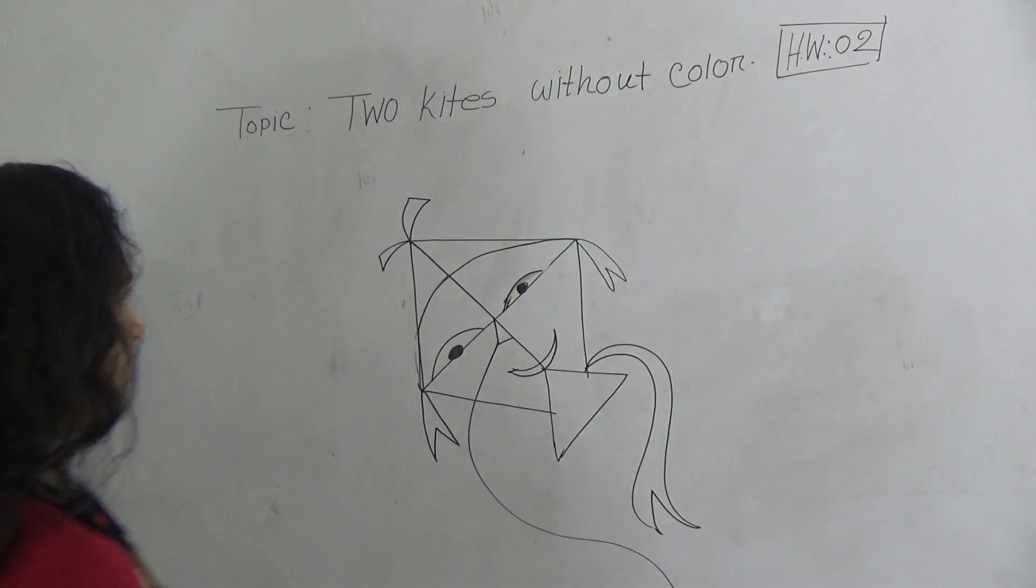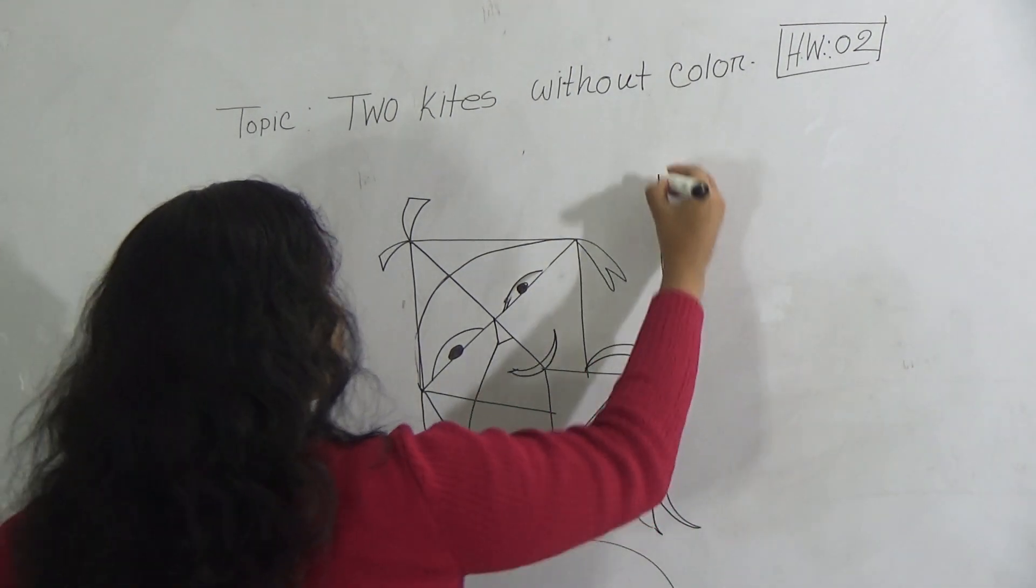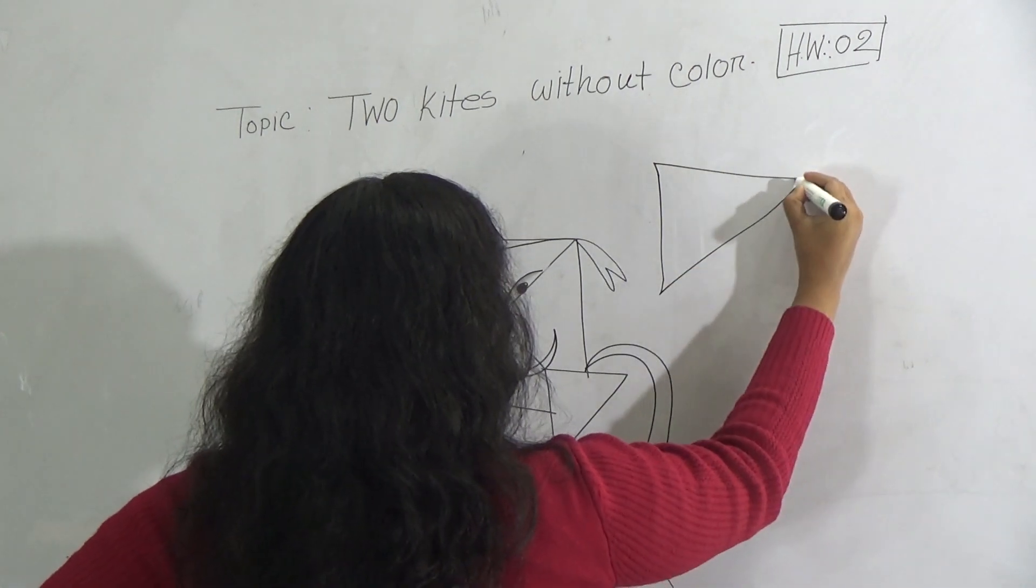And another kite you draw just beside this kite. And the same procedure - do the triangle first.